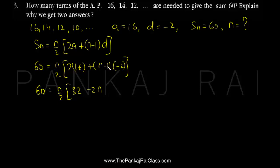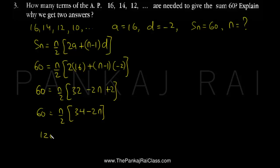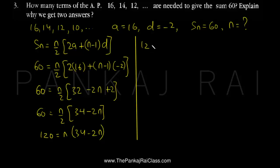Plus minus 1 into minus 2 that will become plus 2. So 60 equals n by 2 and here we are having 32 plus 2 that will be 34 minus 2n. We can send this 2 over here, so this will become 60 times 2 that would be 120 equals n into (34 minus 2n), so 120 equals 34n minus 2n squared.